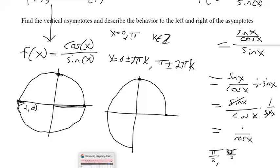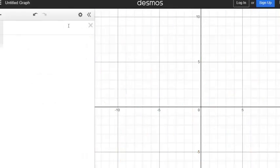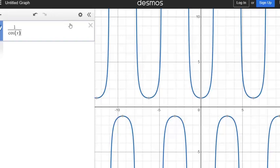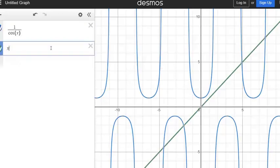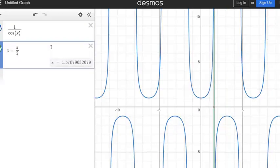And to check the behavior to the left and the right, you just want to graph that. That's the same thing as secant, right? The reciprocal. So whatever it goes on, you could just type in secant if you want.